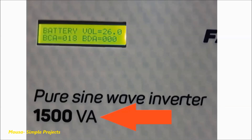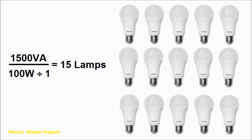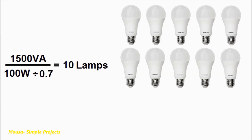This is why the maximum output power of inverters and even diesel generators is marked in volt-amps. Here I have this 1500 volt-amp inverter. 1500 volt-amps means I can run 15 lamps each at 100 watts with a power factor of 1, but if the power factor is 0.7, I can run only 10 lamps.